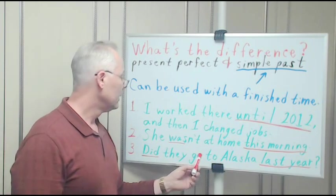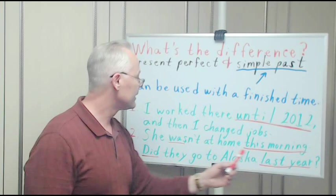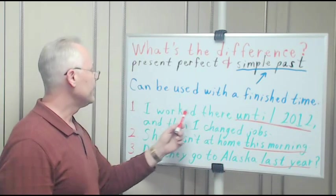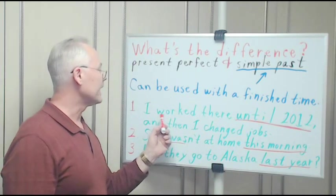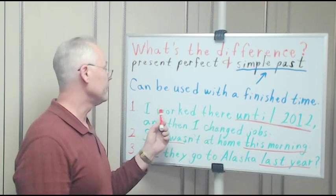Did they go to Alaska last year? So here, number three, we can't have 'have,' but we can use 'did go to Alaska last year.' Last year is the finished time. Now, up here, if I made a mistake, I didn't mean to say we can't use 'was.'